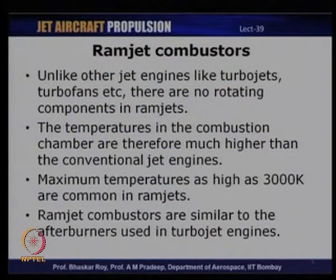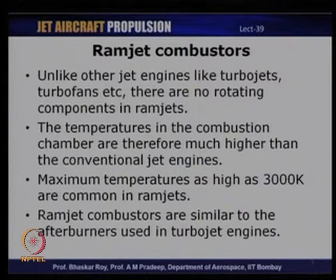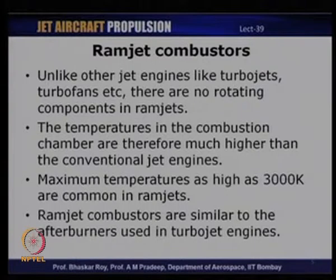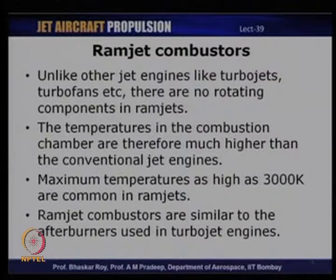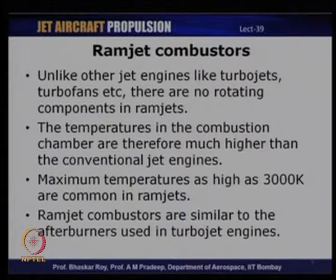Unlike turbojets where there are rotating components, ramjets do not have any rotating components. That is a big advantage for a ramjet, because we can now afford to have temperatures much higher than what is used in conventional jet engines. Maximum temperatures as high as 3000 Kelvin have been commonly used in ramjets, which are unthinkable for conventional jet engines, where turbine blade limitations restrict temperature to about 1500–1600 Kelvin. Ramjet combustors are very similar to the afterburners used in turbojet engines.